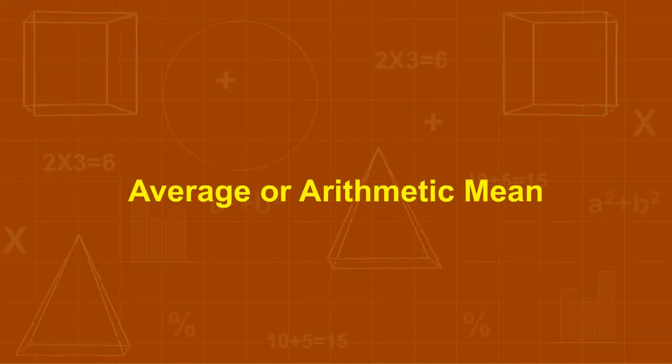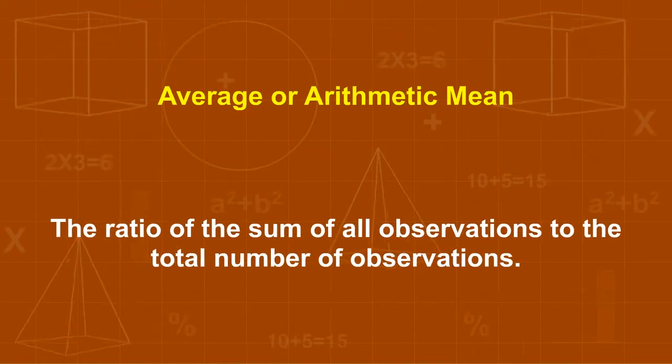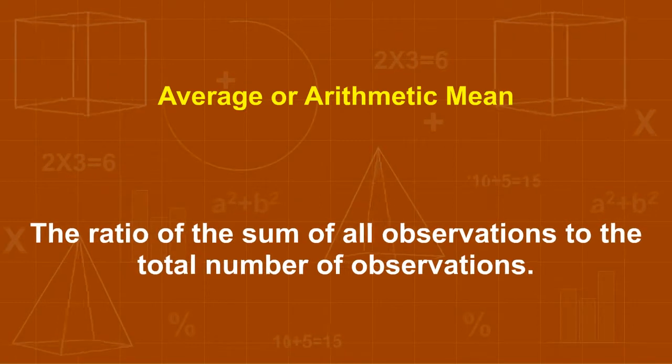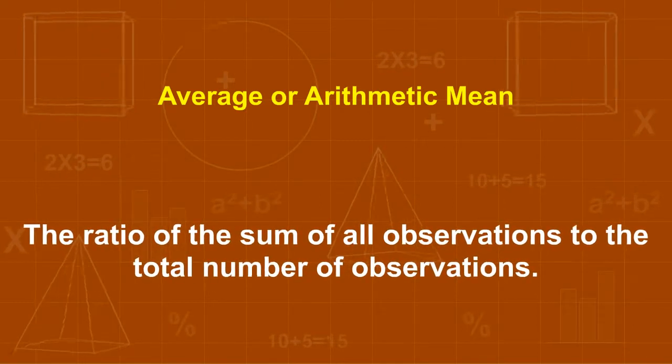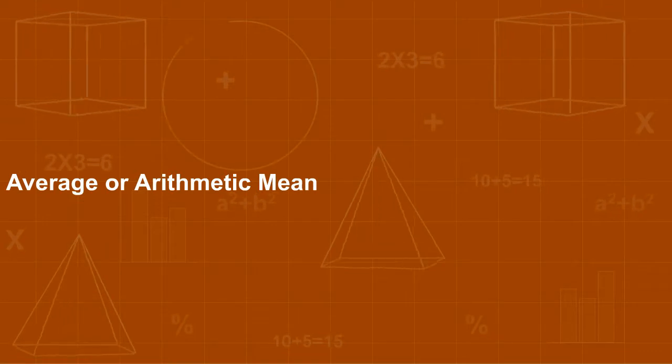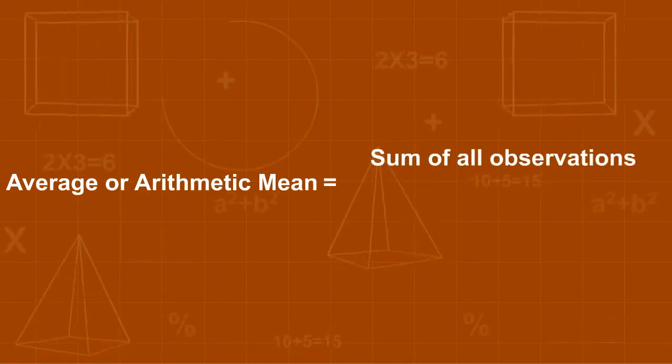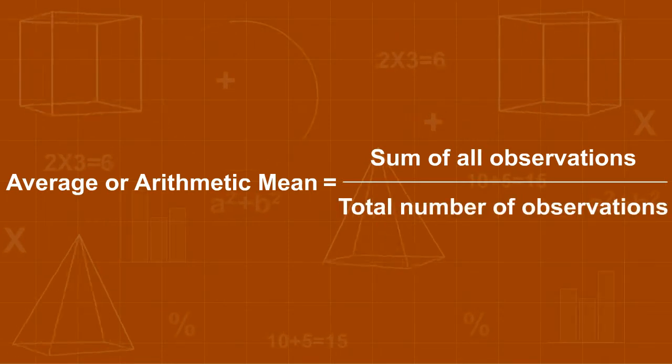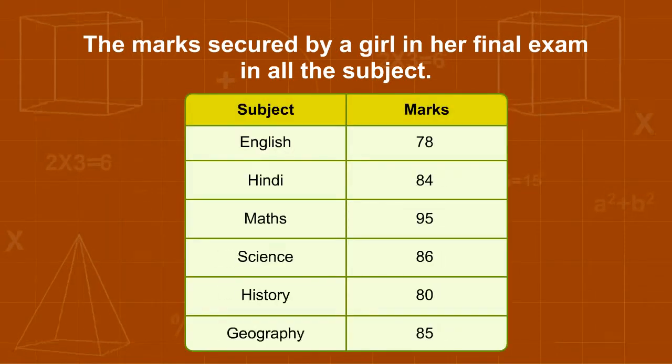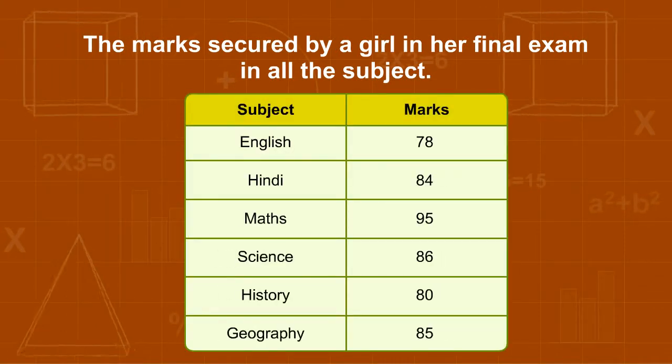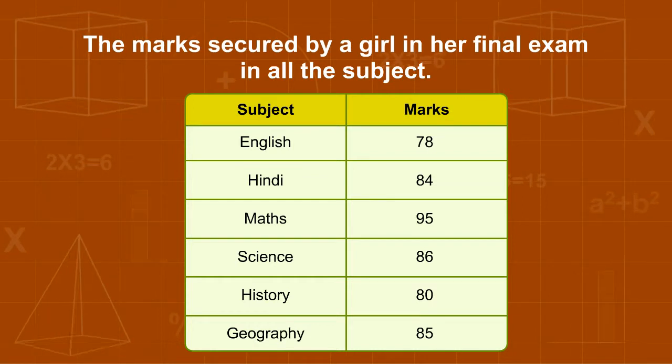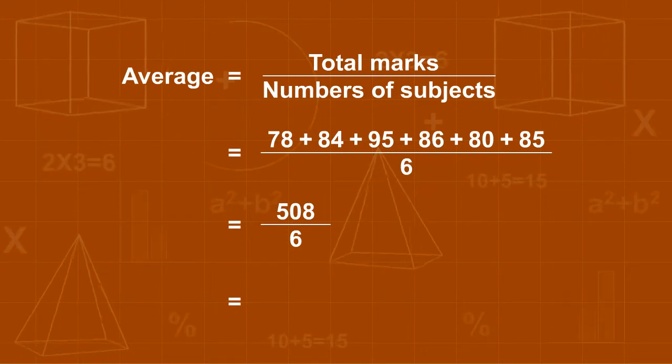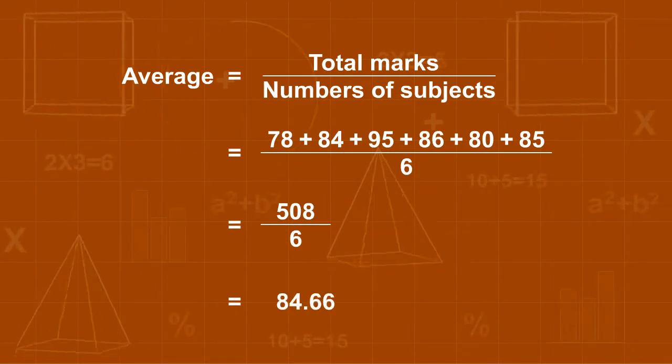Average or Arithmetic mean. Arithmetic mean, also known as average, is the ratio of the sum of all observations to the total number of observations. Average or Arithmetic mean is equal to sum of all observations upon total number of observations. For example, the marks secured by a girl in her final exam in all the subjects is as shown in the table. On applying the formula of average, we will see that the average mark obtained is 84.66.